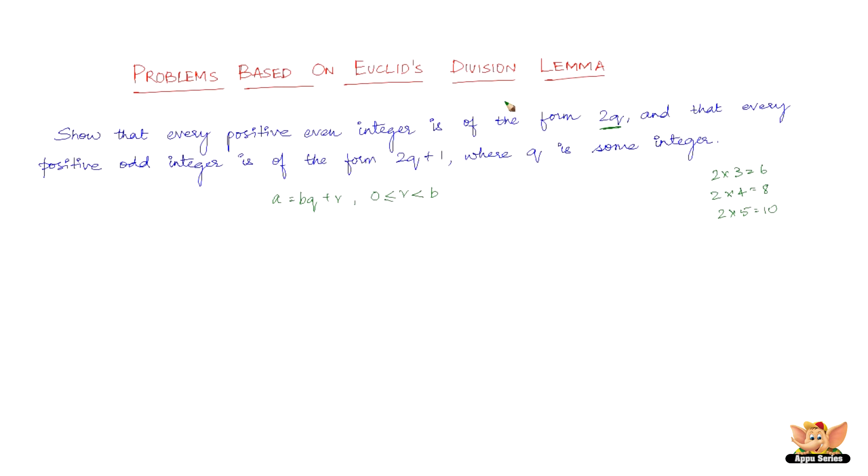Prove it in the form of Euclid's division lemma, and that every positive odd integer is of the form 2q plus 1. Obviously, because you multiply anything with 2 it becomes an even number, and you add 1 to it, it obviously is going to become an odd number.